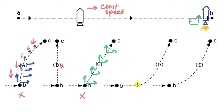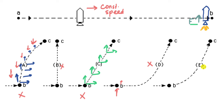Option D says the rocket continues moving horizontally for some time after point B and then takes a curved path. But if a force starts acting at point B, there is immediately an upward acceleration, causing a change in vertical velocity right from point B. There is no reason the rocket would continue moving purely horizontally with zero vertical velocity before curving. Option D is also wrong.